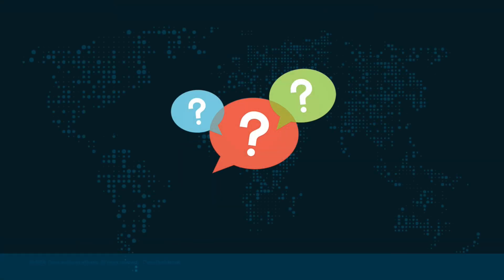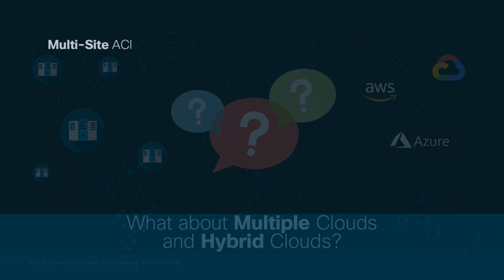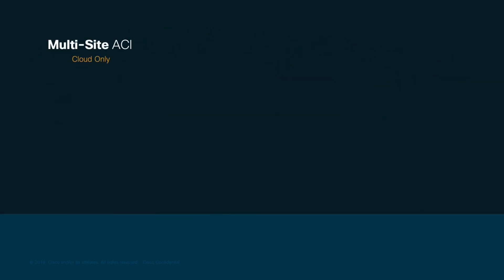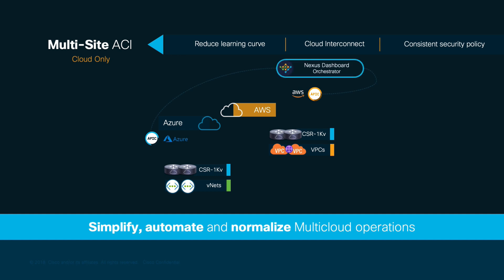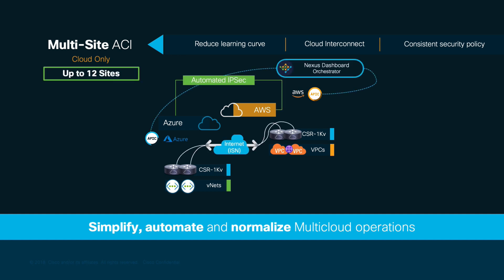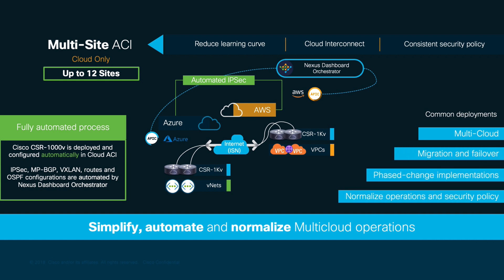Switching gears, we also have cloud ACI sites. For cloud-only deployments, if you have cloud ACI running on AWS and Azure, for example, and you connect Nexus Dashboard Orchestrator to your cloud APIC running on each of them, you can automatically interconnect both clouds in a few seconds, leveraging the automatically deployed CSR 1000Vs on each cloud and configuring IPsec, OSPF, and MP-BGP EVPN VXLAN across them. This is very convenient when you need to manage, connect, and configure multiple clouds in a consistently secure way, or when you are planning to migrate or failover between clouds following a configure-once, deploy-anywhere model.